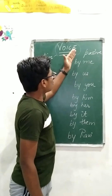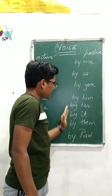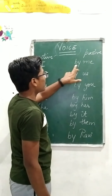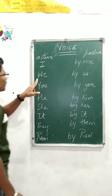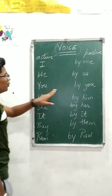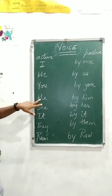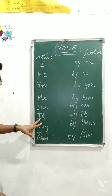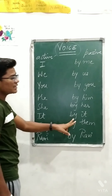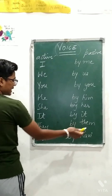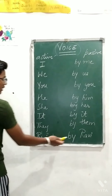In passive voice, when you change the subject to object, here is how the pronouns change: 'I' becomes 'by me'; 'we' becomes 'by us'; 'you' becomes 'by you'; 'he' becomes 'by him'; 'she' becomes 'by her'; 'it' remains 'by it'; 'they' becomes 'by them'; 'Ravi' becomes 'by Ravi'.